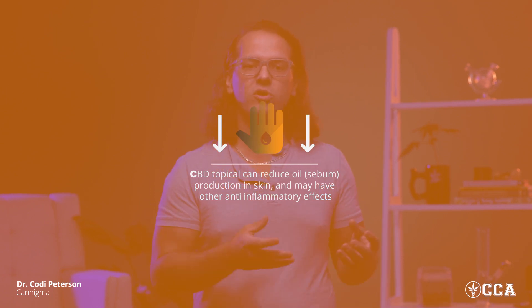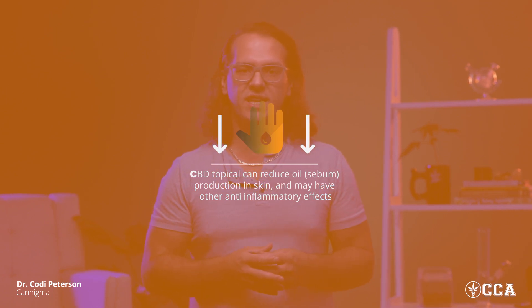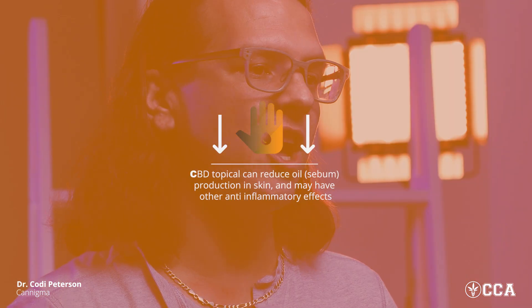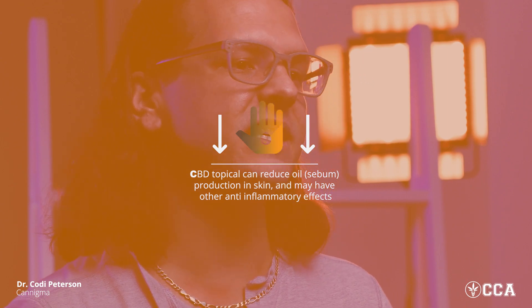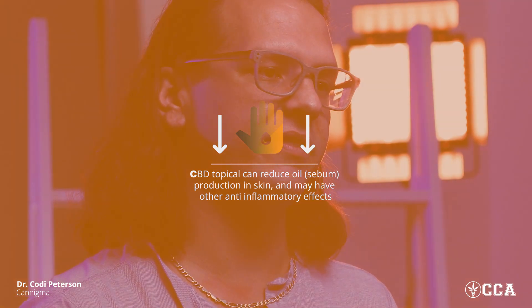Generally speaking, cannabis doesn't have too much effect on the integumentary system. However, using a CBD topical can help reduce some of the oil production in the skin, may help with hair growth, and has definite anti-inflammatory effects. The skin and the endocannabinoid system are tied, and topical cannabinoids certainly have their role in cannabis medicine.